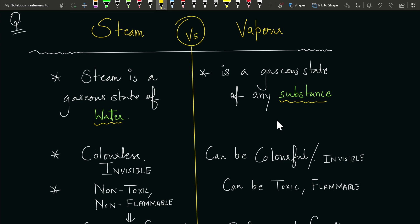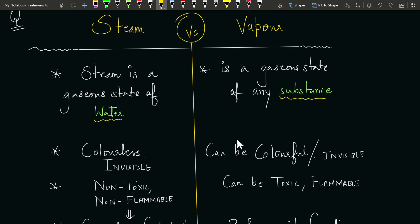There are other differences that you can differentiate in terms of visibility or in terms of toxicity or flammability. Steam is obviously colorless and invisible, and vapor can be colorful or invisible. Another very important quality of steam is that it is non-toxic and non-flammable.